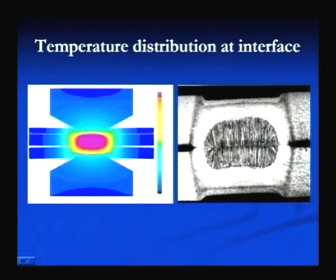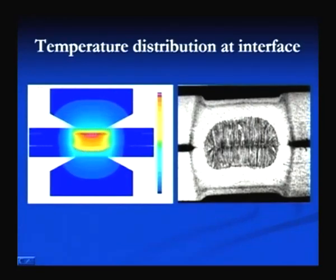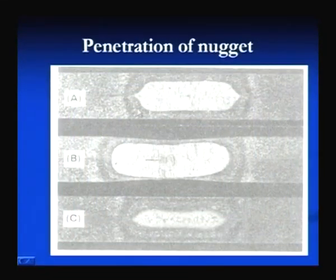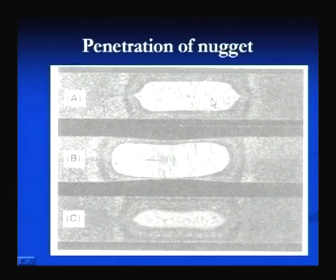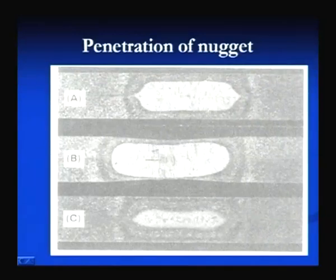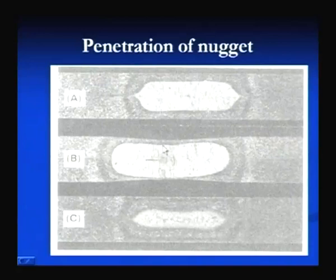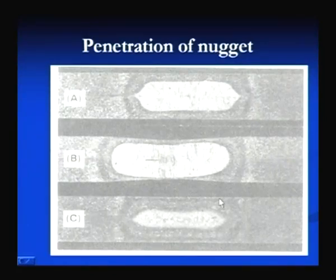When the nugget is formed, the penetration should be optimum — not excessive and not too little. Optimal penetration on both sides of the plate is required. Excessive penetration leaves a very thin sheet unmelted and may weaken the joint. Very less penetration on both sides is also undesirable. The extent of penetration depends on how much heat is generated during the flow of current through the interface. Setting the welding current and the time for which current flows is very important for the required penetration to form a sound weld joint.